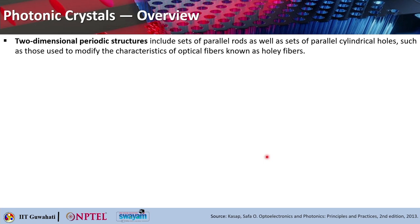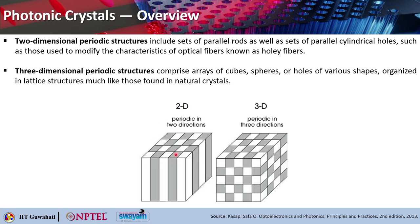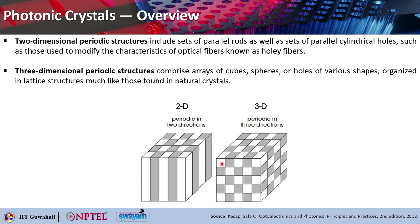You can go for 2D photonic crystals — they basically include parallel rods, as already discussed. You can have parallel rods or parallel cylindrical holes. These cylindrical holes are important to modify the characteristics of optical fibers, and those are called holey fibers. You can also think of three-dimensional structures where you can have arrays of cubes, spheres, or even holes of different shapes organized in lattice structures similar to those found in natural crystals. When we go into more details, we will see those exact orientations.